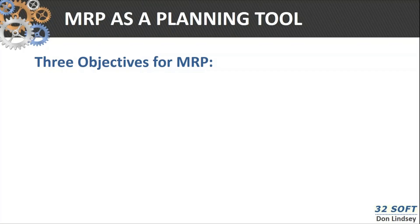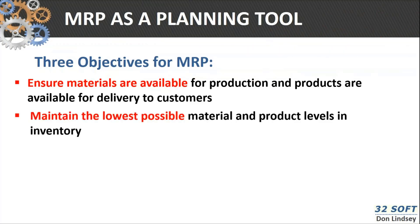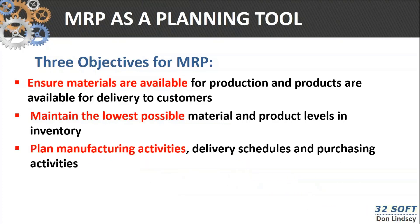MRP basically has three objectives. The first is to make sure that you have materials available for production and for the products that you're going to produce. It also allows you to maintain the lowest possible inventory and production levels of your raw items, and it is also a very effective planning tool for scheduling both work orders and purchase orders.